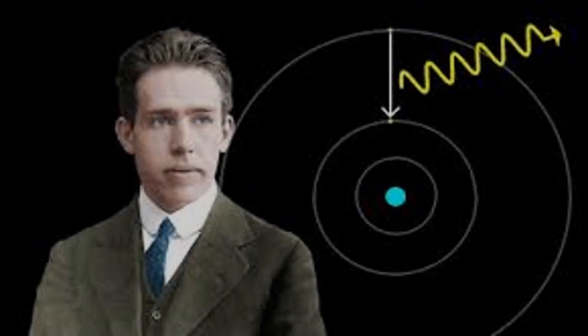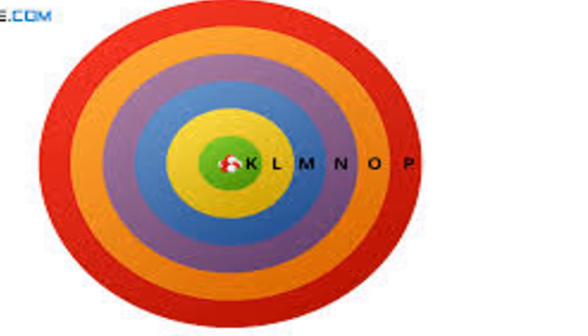Niels Bohr's Nobel Prize was due to his ability to explain the emission and absorption lines of hydrogen. What he proposed is that electrons in atoms exist in orbit around the nucleus, which he called shells. And each shell has an associated amount of energy.